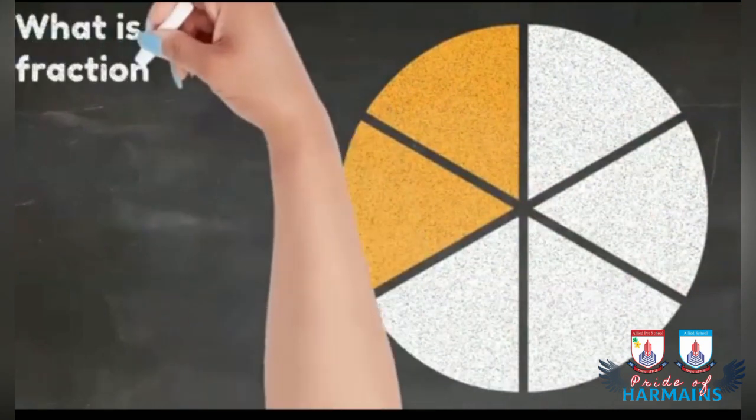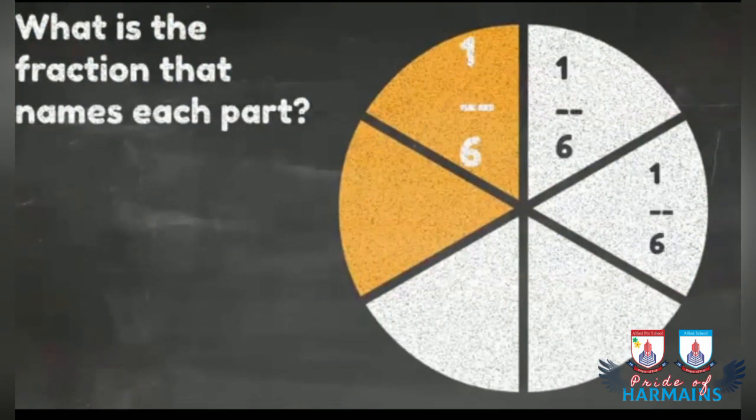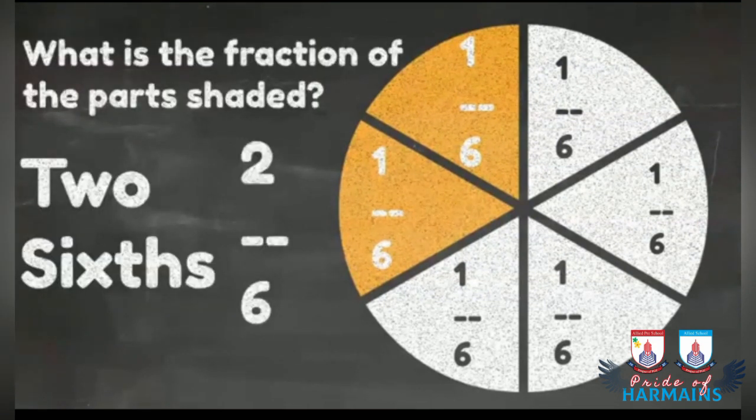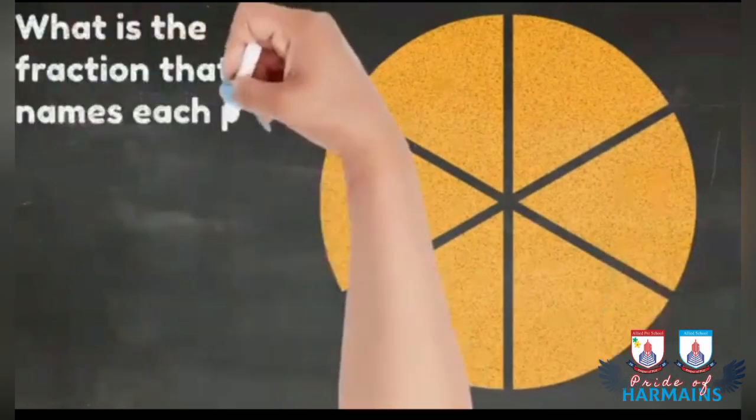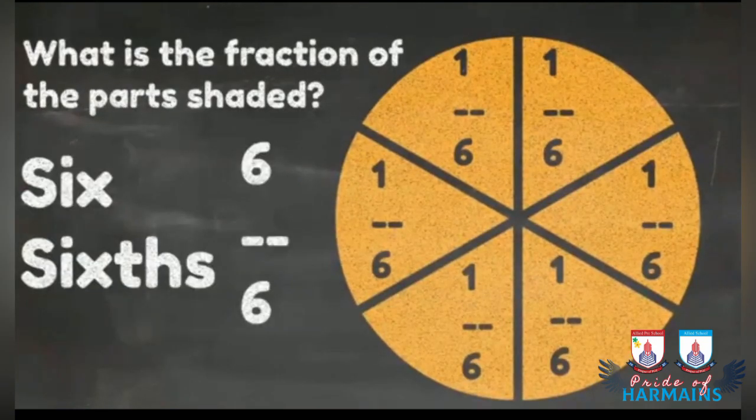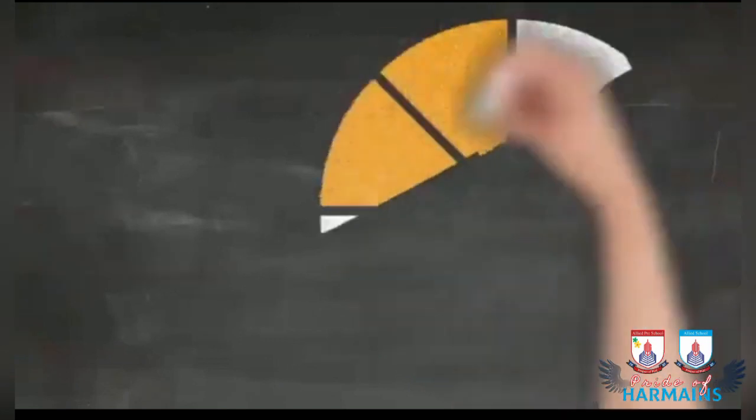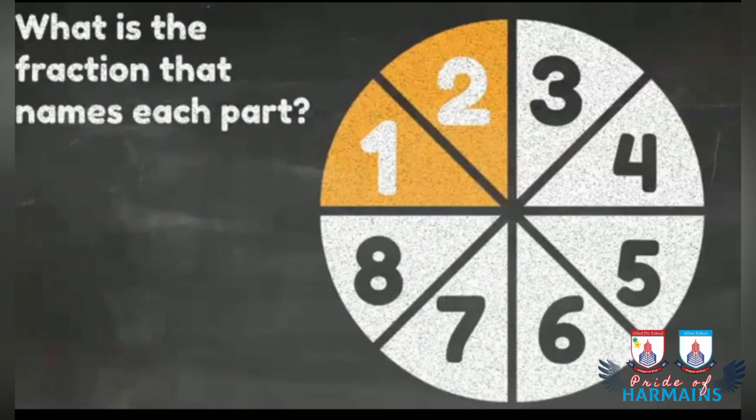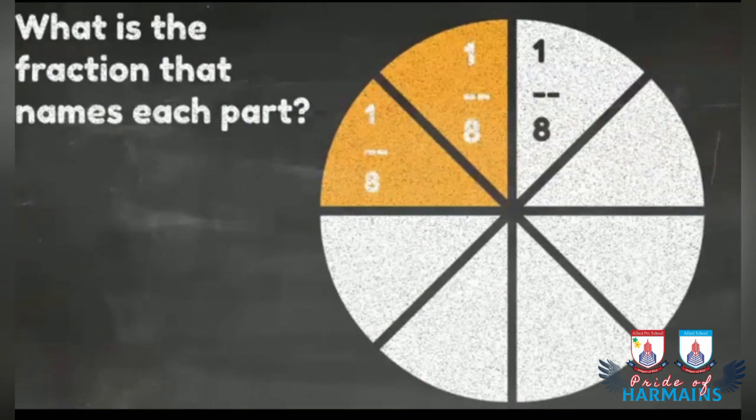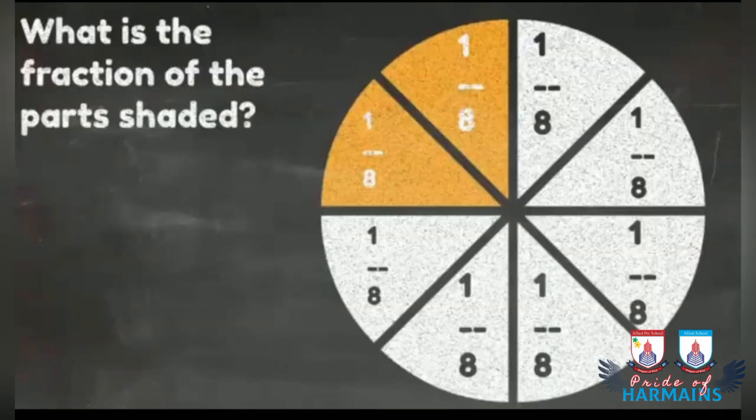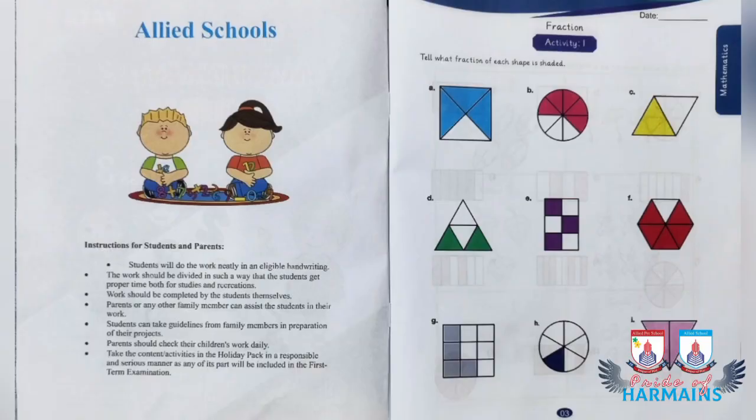Isi tarah ek aur example karte hain, jisme hum agar bus do portion shaded hain, to total six part hain. To humare ye two portion kya banega? Two by six. Now, if we have a figure in which 6 parts are completely shaded, then what will be the answer? 6 by 6th of fraction. Now, another example is, this total part is 8, but the portion is shaded 2. So, the answer would be 2 by 8th of fraction.